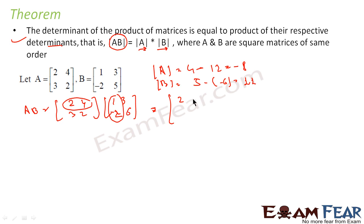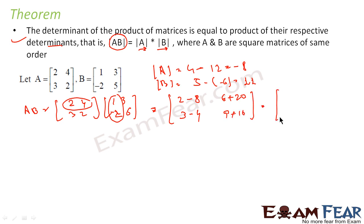The matrix AB is computed by multiplying A and B. We get: first row entries as 2×1 + 4×(−2) = 2−8 = −6, and 2×3 + 4×5 = 6+20 = 26; second row entries as 3×1 + 2×(−2) = 3−4 = −1, and 3×3 + 2×5 = 9+10 = 19. So AB is [−6, 26; −1, 19].